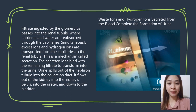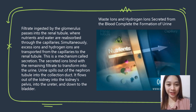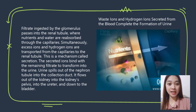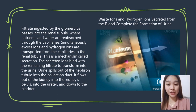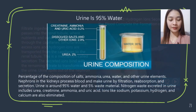Urine spills out of the nephron tubule into the collecting duct, flows out of the kidney into the kidney's pelvis, into the ureter, and down to the bladder. Secretion involves disposing of substances not already in the filtrate, eliminating undesirable absorbed substances, ridding the body of excess potassium ions, and controlling blood pressure.